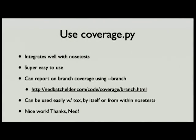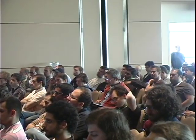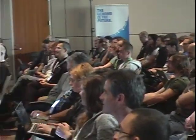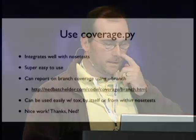I use coverage.py. I like it a lot and I recommend it. It's written by Ned Batchelder, and Ned's code is awesome — thank you, Ned. It integrates with nosetests, it's super easy to use. I use it almost exclusively in the context of running nosetests as my test discovery tool. You can basically just say --with-coverage and you'll have coverage. You can limit the scope of that coverage, and it'll output HTML output for you. You can even report on branch coverage using the --branch flag. It can be used easily with tox by itself or from within nosetests.